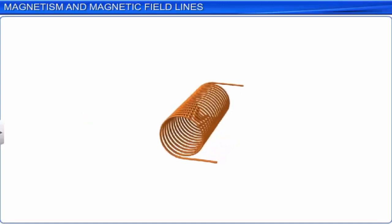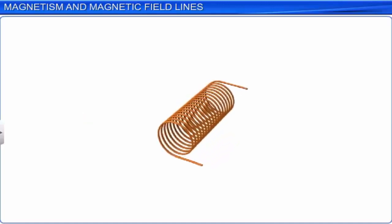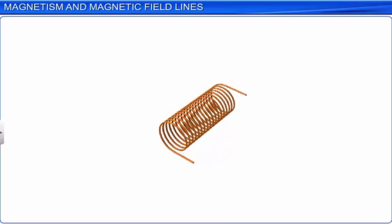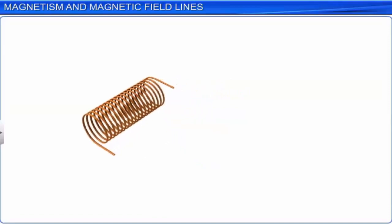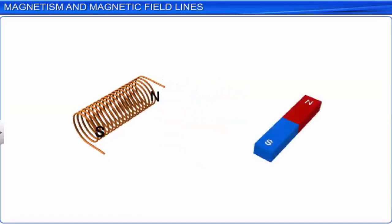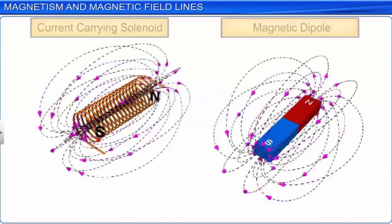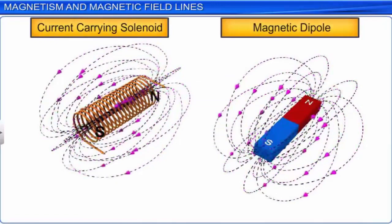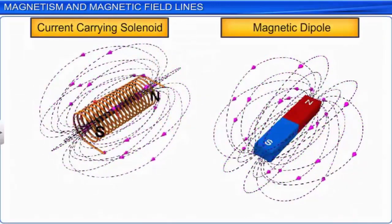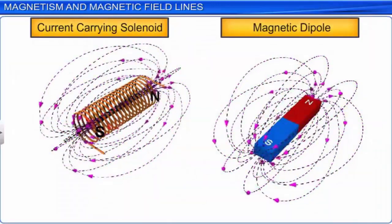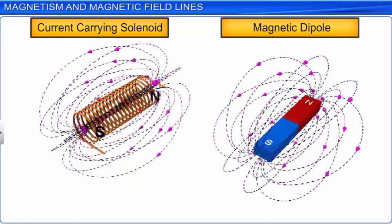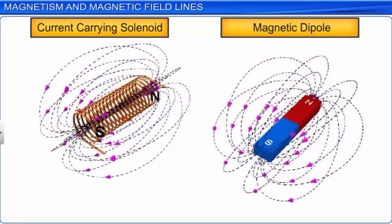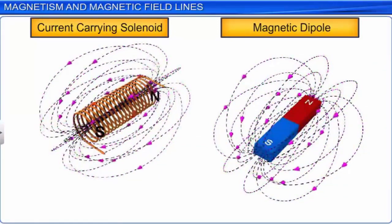A finite number of continuous turns of a conducting wire wound in a helical shape represents a solenoid. We learnt earlier that the magnetic field lines of a bar magnet are similar to the field lines of a solenoid. Hence, a bar magnet can be assumed to be the same as a large number of current carrying loops placed adjacent to each other.